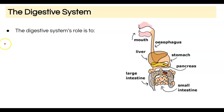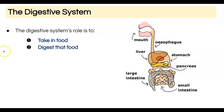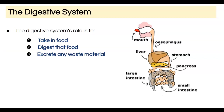The role of the digestive system is to take in food — but what do we do with that food? We digest it. By digesting, we're breaking food down for its nutrients and absorbing those nutrients, and lastly, one of the roles of the digestive system is to eventually excrete any waste material.